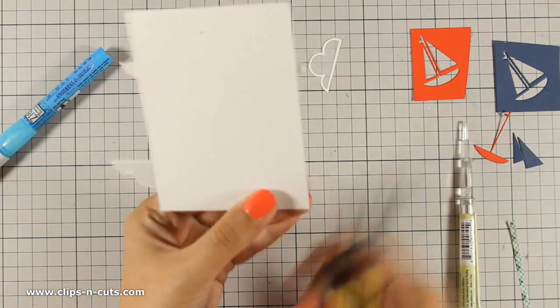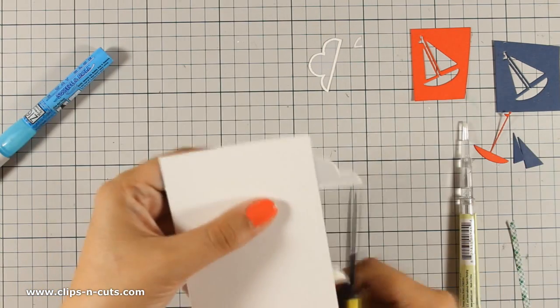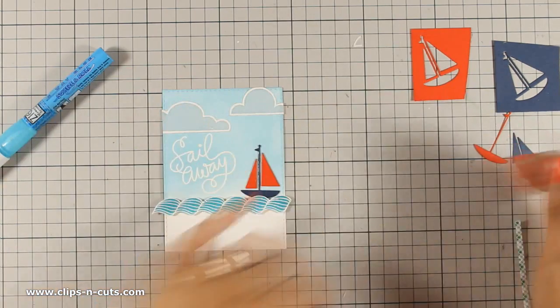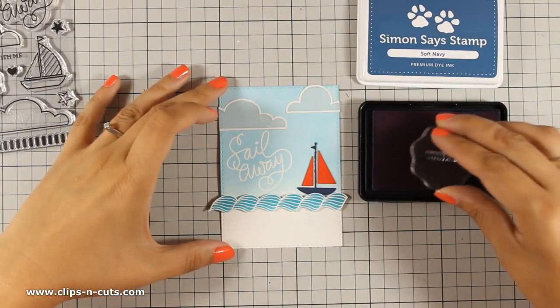I am going to use my scissors to cut out the little parts that stick out from the clouds. So my little panel is almost ready all that's left to do is to stamp the rest of the sentiment.